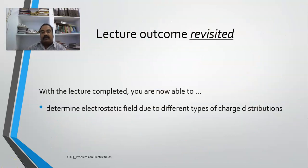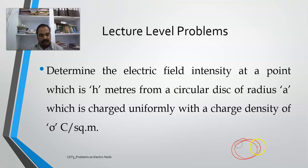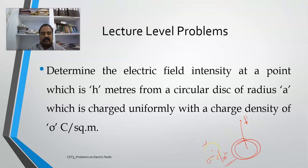I hope you are now able to compute the electrostatic field due to different types of charge distributions. This is your problem to do: I have done it for line charge density; now you are supposed to do it for a circular disk of radius A, which is a surface charge with density lambda coulomb per meter squared, and determine the electric field at a particular point.